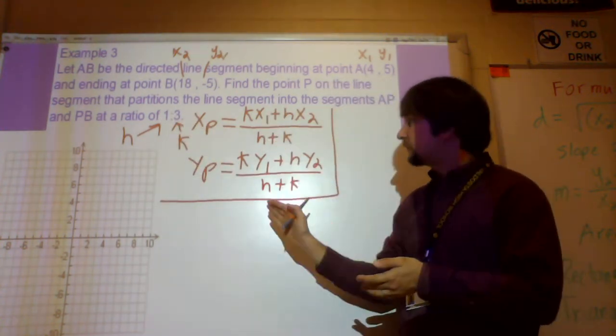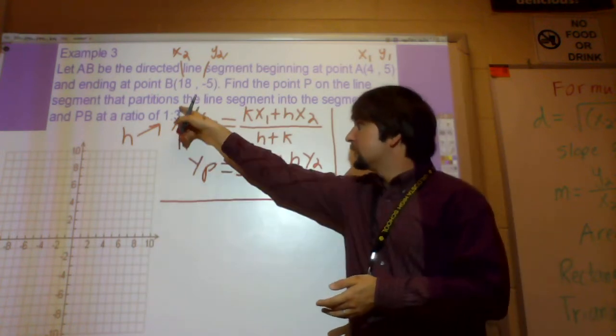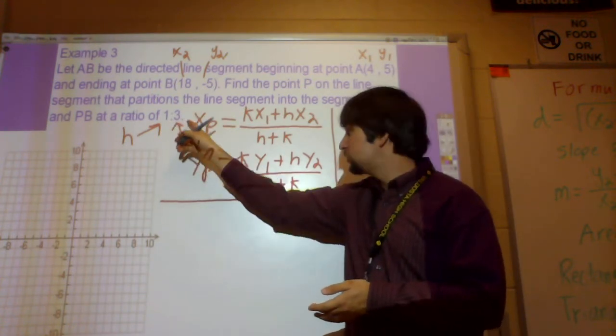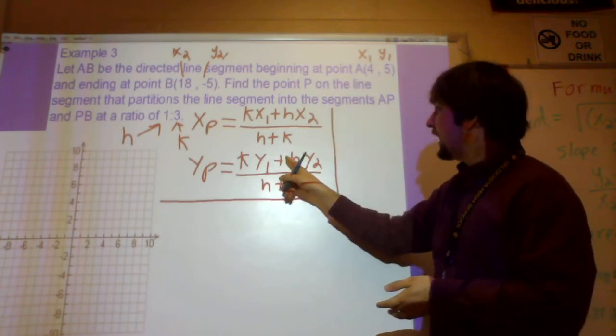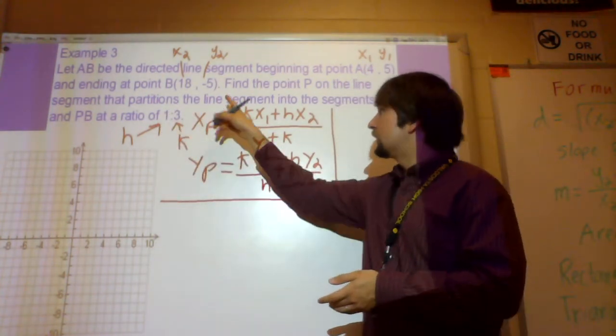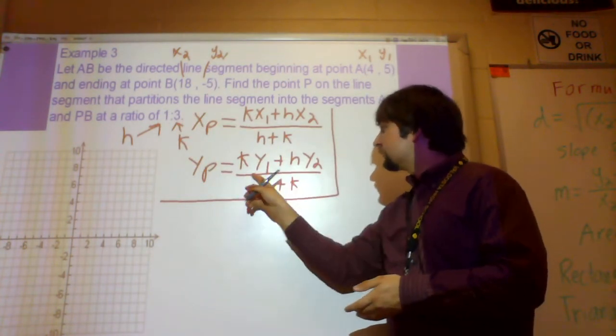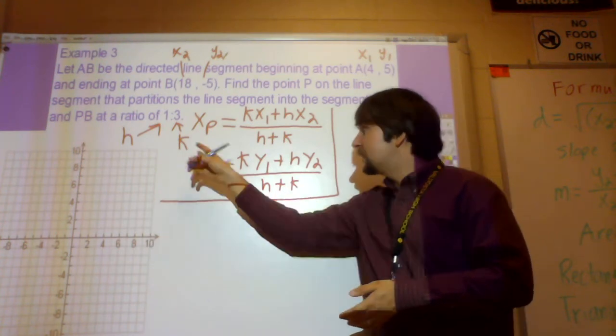To find the Y, you would do K, you would take this number that's in the ratio, do K times Y1 plus H times Y2. And then you would divide that by H plus K, you would just add those together.